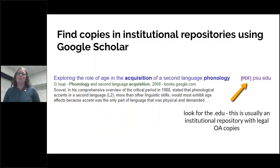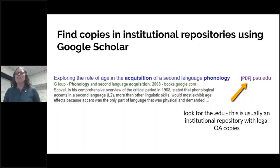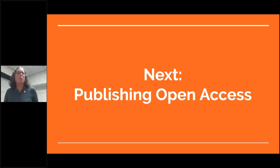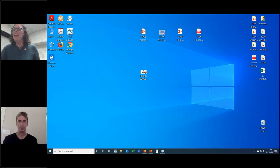You can also find copies in repositories using Google Scholar. When you see a PDF link from, say, PSU.edu, that means there's a copy available in their institutional repository. So that was a brief overview of what open access is and how to find open access content. Now I want to turn it over to panelist Matt Gordon, who will talk more about publishing open access.